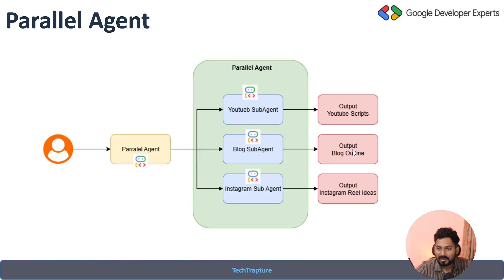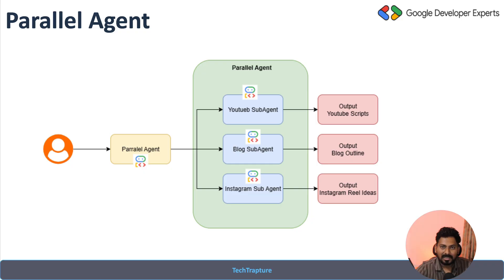We'll create one parallel agent which will call three subagents in parallel. Users want to create content on three different platforms — YouTube, a blog on Medium, and reels on Instagram. Since these outputs are independent of each other, unlike the sequential agent where one agent's output feeds into the next, all three subagents can run in parallel.